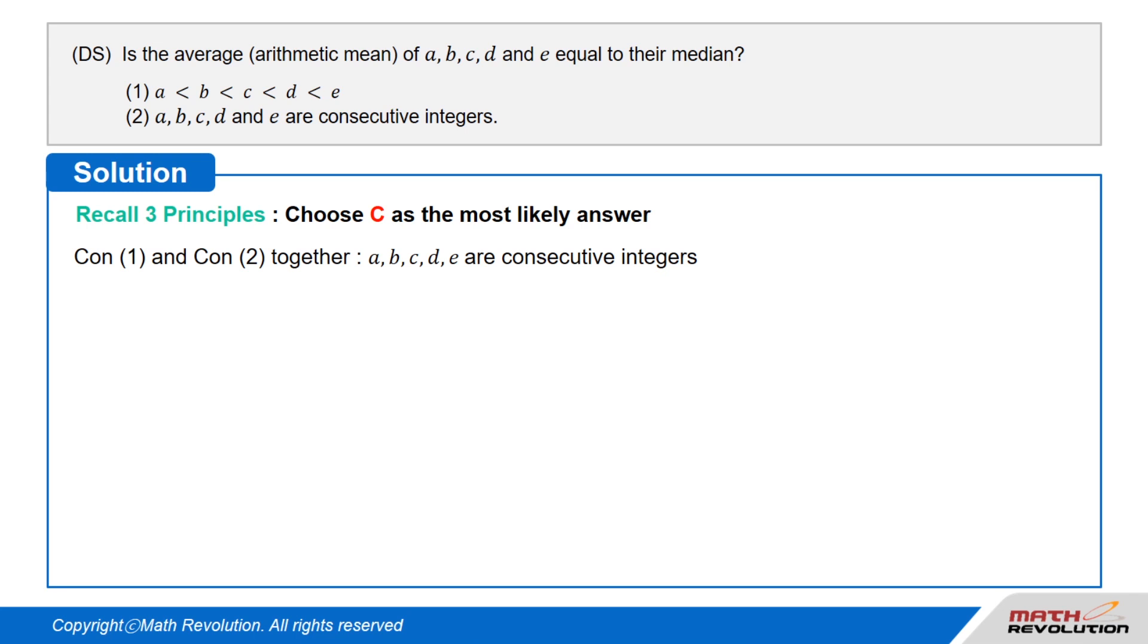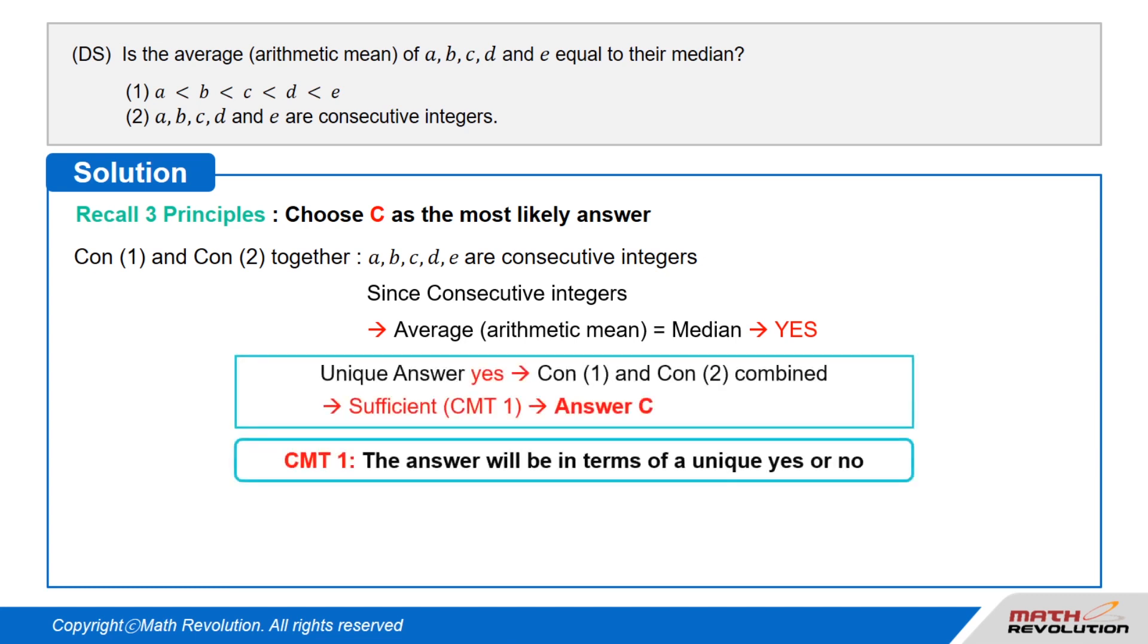Let's look at both conditions together. We know that A, B, C, D, and E are consecutive integers in this order. Since they are consecutive integers, the average or arithmetic mean and the median are the same, so we get yes. The answer is unique, yes, so the conditions combined are sufficient according to CMT 1, which means that the answer will be in terms of a unique yes or no. Thus, C seems to be the answer.